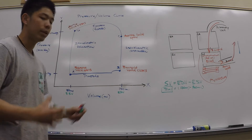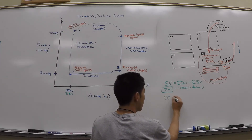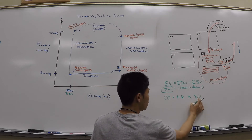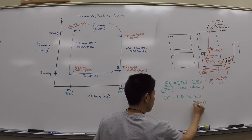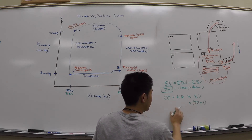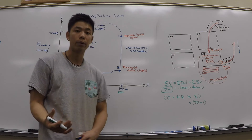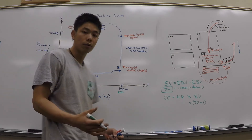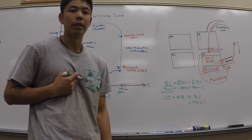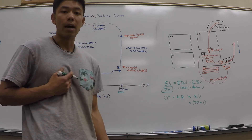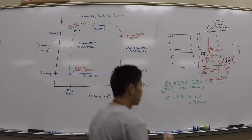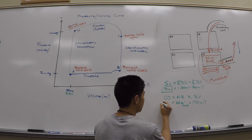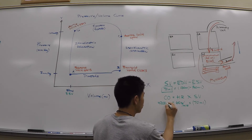Another equation we can relate that to is cardiac output. Cardiac output equals heart rate times stroke volume. We already know stroke volume is 70 milliliters for the typical human being. Heart rate is the number of times our heart beats per minute — if you feel your pulse for one minute, that's usually around 60 beats per minute for a typical person.